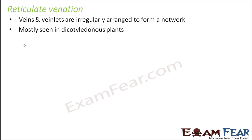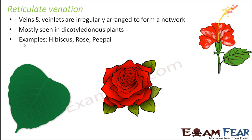Plants with two cotyledons. Examples include hibiscus, rose, and peepal — these are some plants where we see reticulate venation. If you look at the example of reticulate venation, there is no specific pattern: some veins go this way, some that way, some another way. You basically have these veins and veinlets arranged haphazardly.